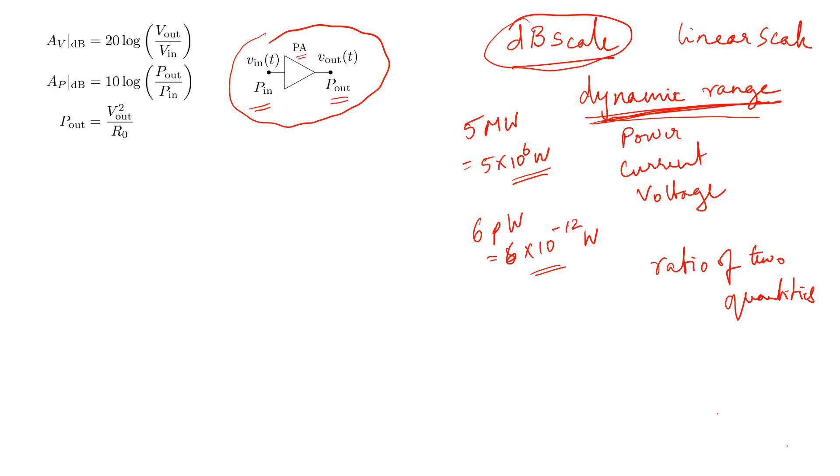Then the gain of the amplifier, which we can call the power gain, is going to be the output power over the input power. The amplifier gain is the ratio of the output power over the input power. Both being in units of watts, A_P,